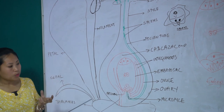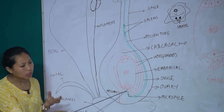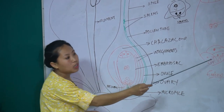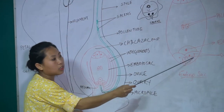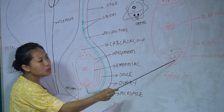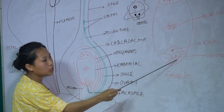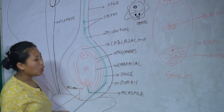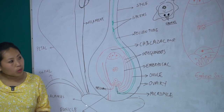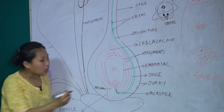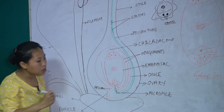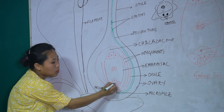The pollen tube makes its way through the style and into the embryo sac by producing enzymes which digest the cells of the style, finally entering the ovule and embryo sac with the two sperms. Upon reaching the embryo sac, the pollen tube first enters into the synergids. One of the two synergids is the first to receive the pollen tube, which then discharges its sperms into the synergid.